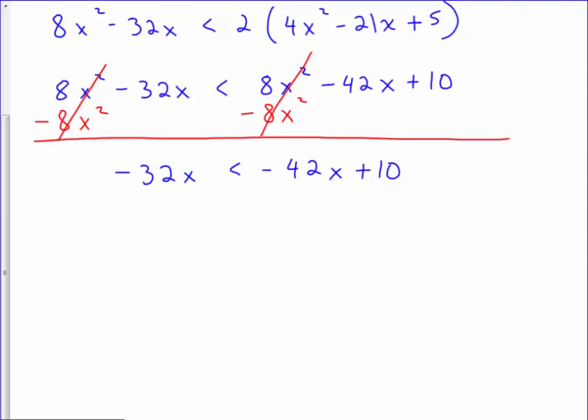With the result, I now have x's on both sides. I will add the 42x over and have a result of 10x is less than 10.